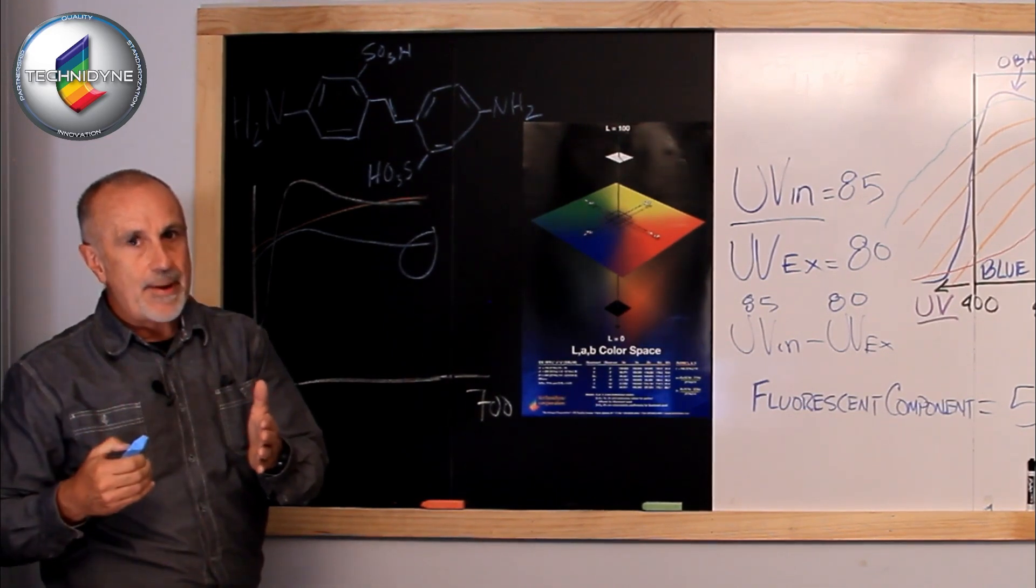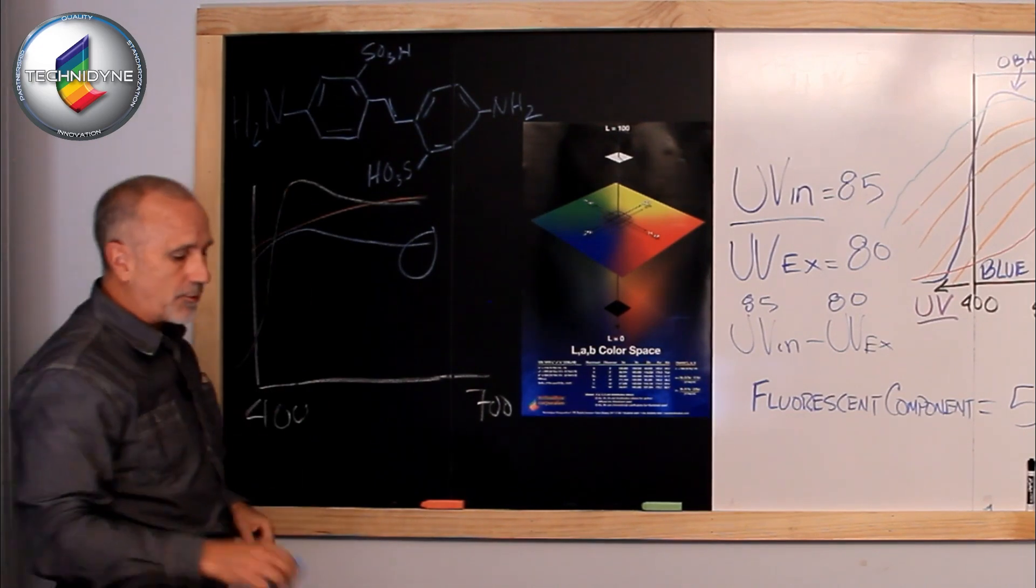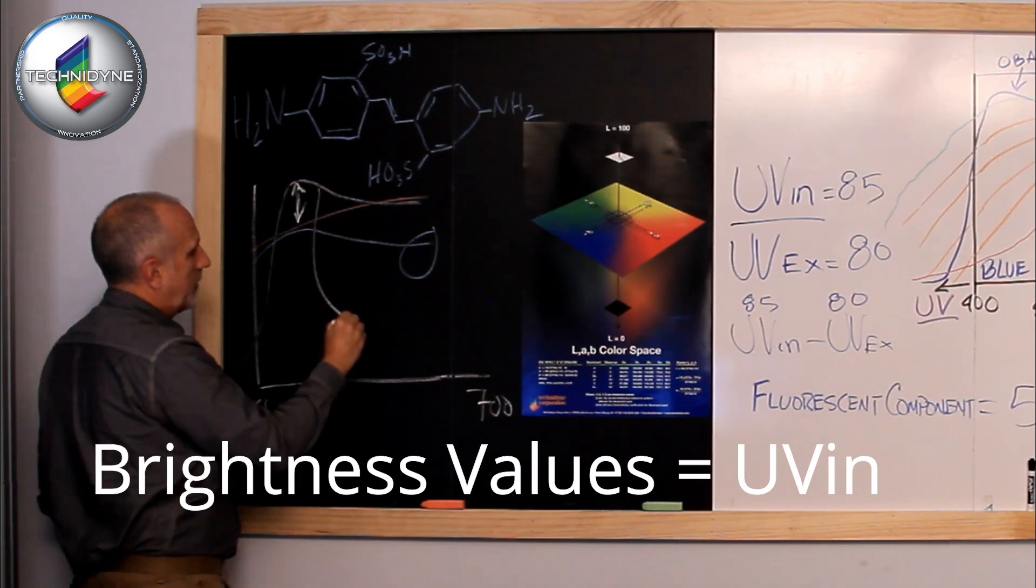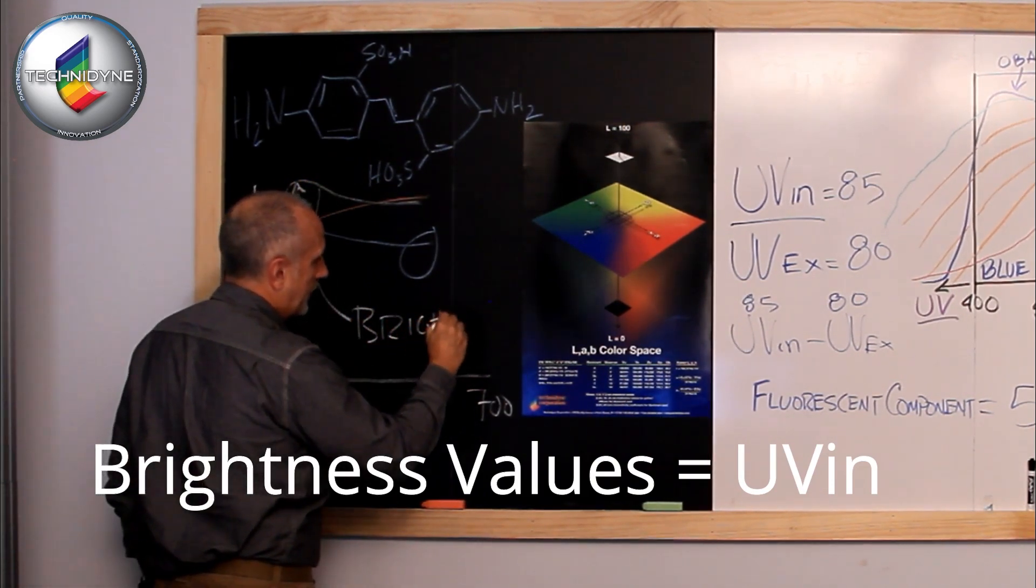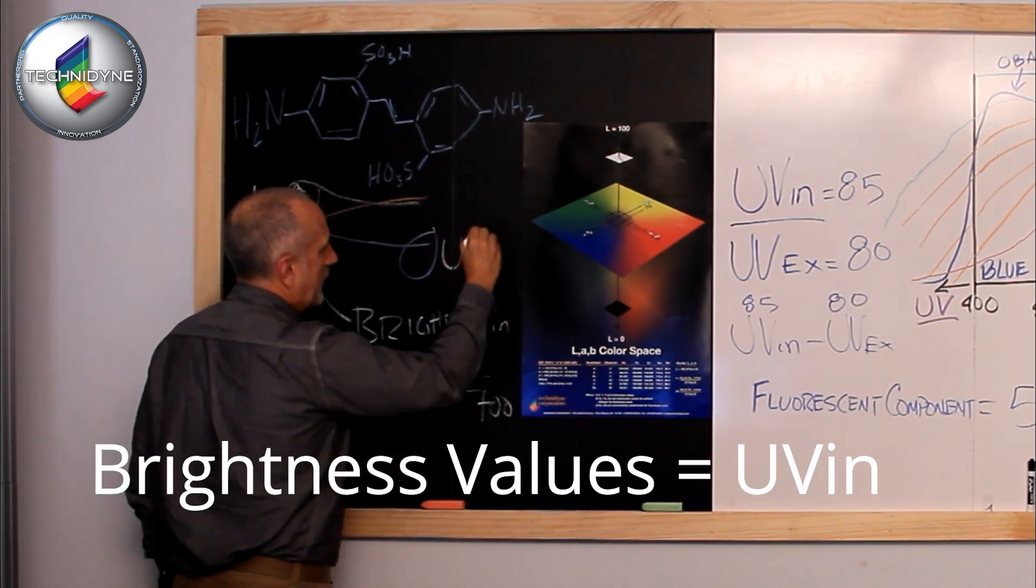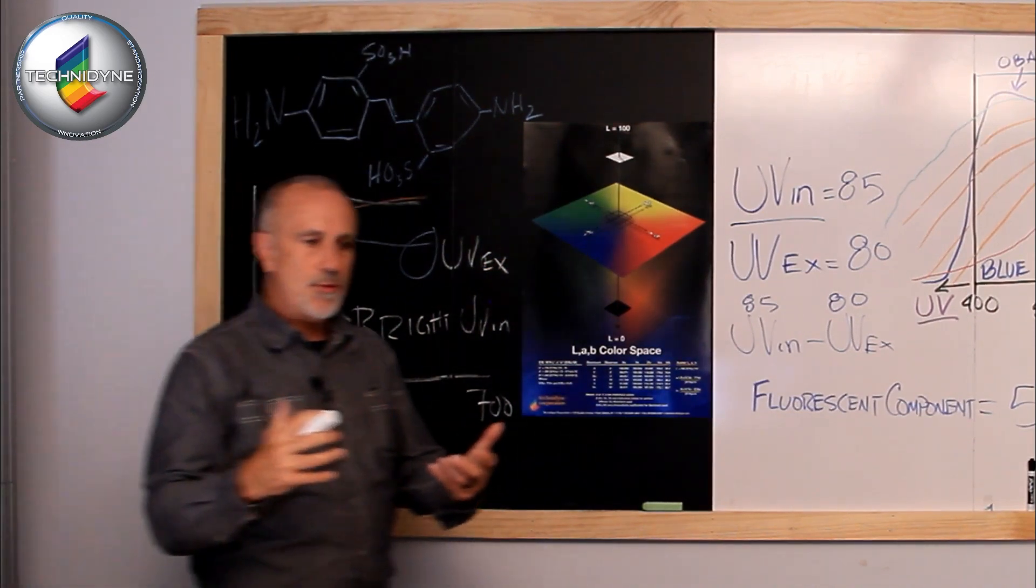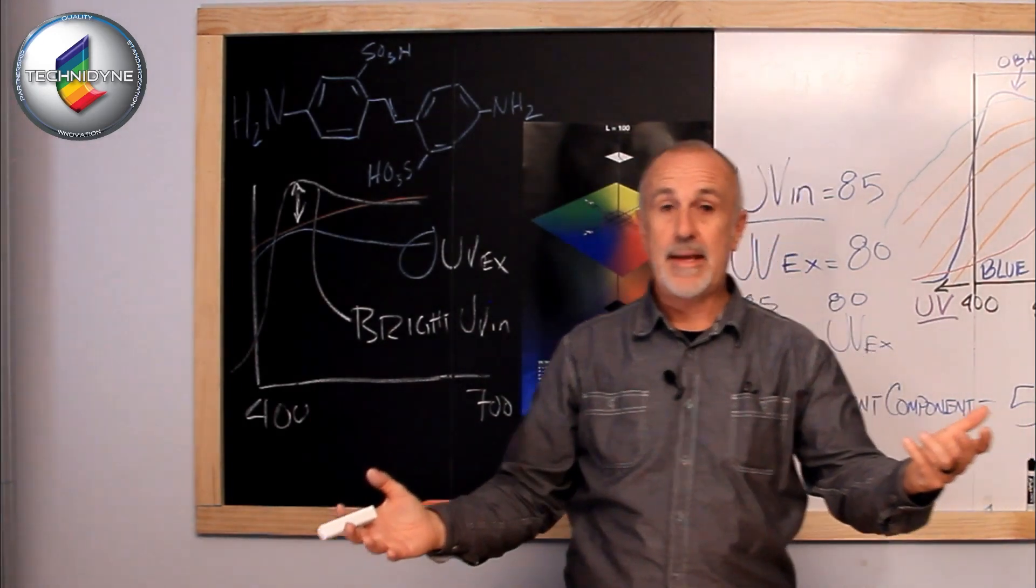Then they control their optical brightener with brightness UV included. So this is UV in and this is UV X. And now they've separated those two, so they're not chasing each other. They've been able to separate that.